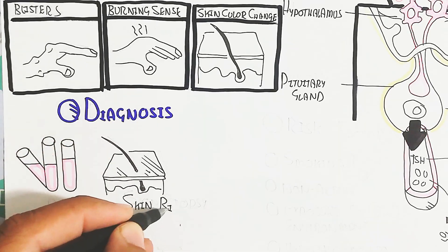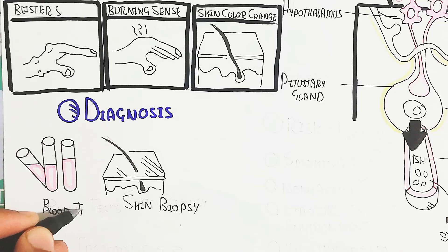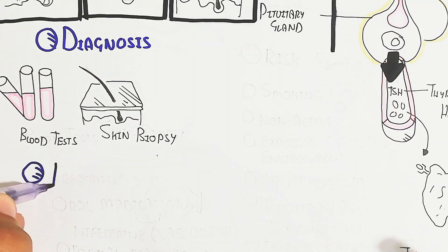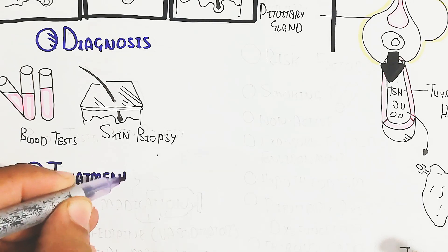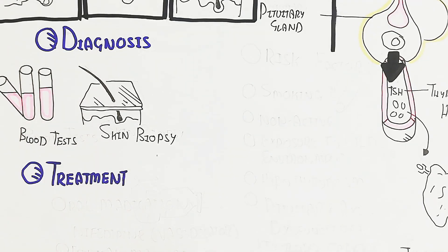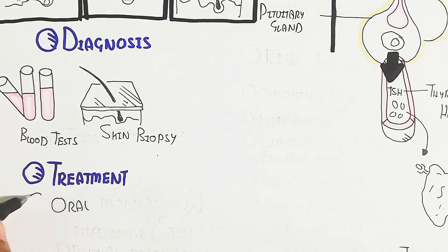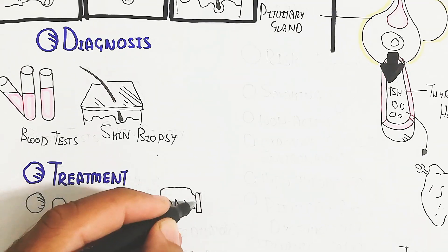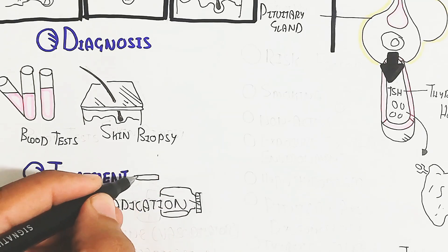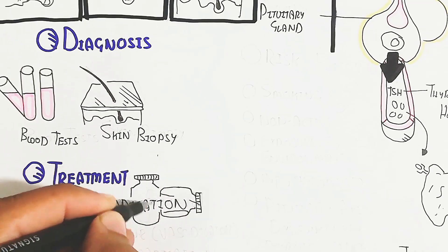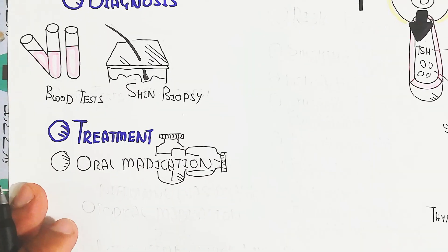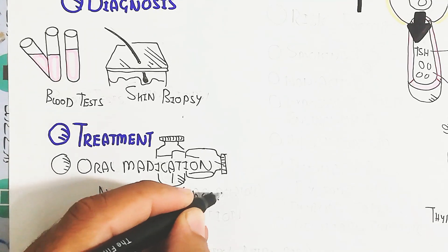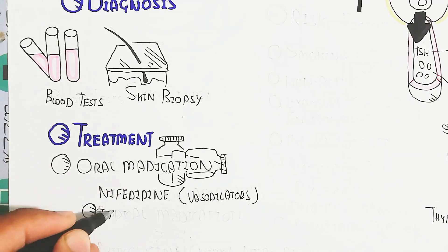So the diagnosis is the blood test to understand the sodium and potassium as well as other things. And the skin biopsy for confirmation of the Chilblain through blood test. And the treatment is the oral medication, the nifedipine vasodilators, and topical medication.